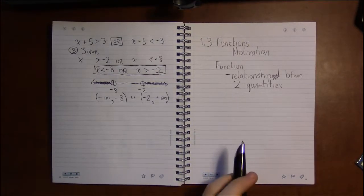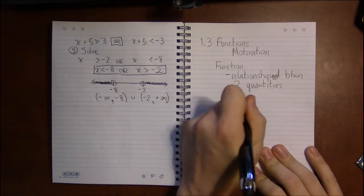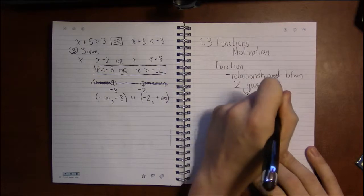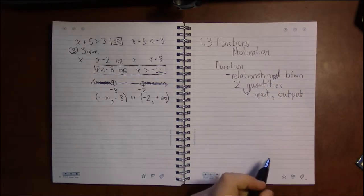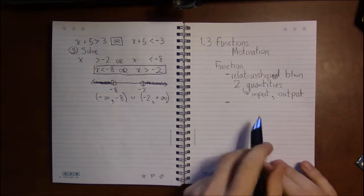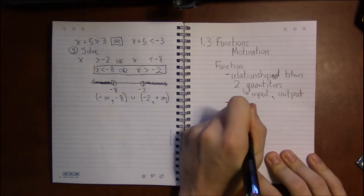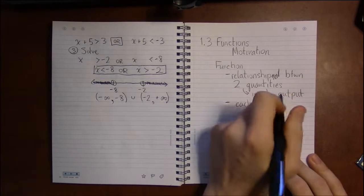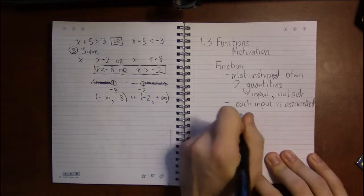We'll get into some examples in just a second. Now one of these quantities we'll call the input of the function, and the other quantity will be called the output of the function. The only other thing that a function has to satisfy in order to be a function is that each input is associated in this relationship to at most one output.